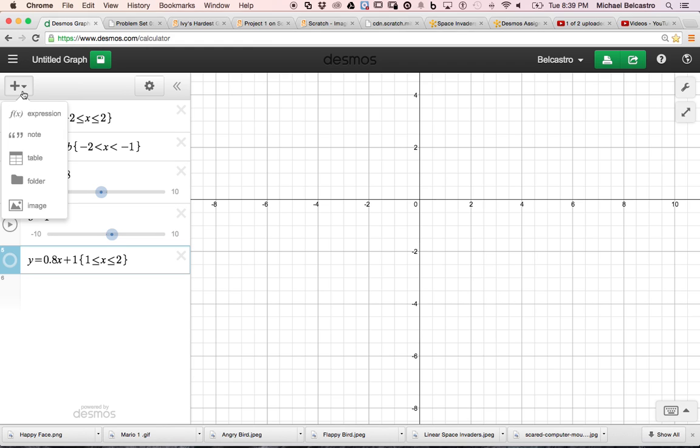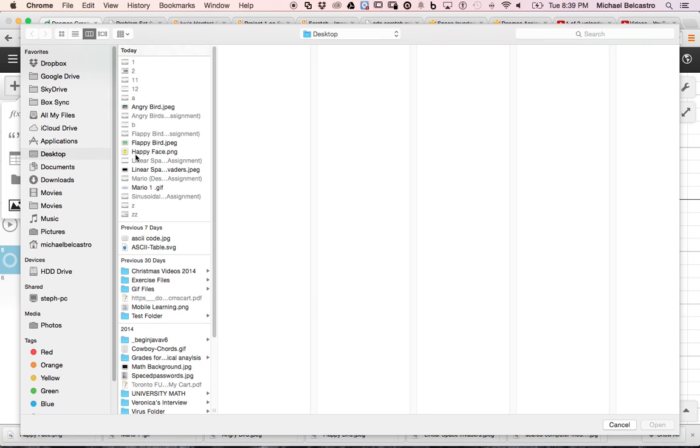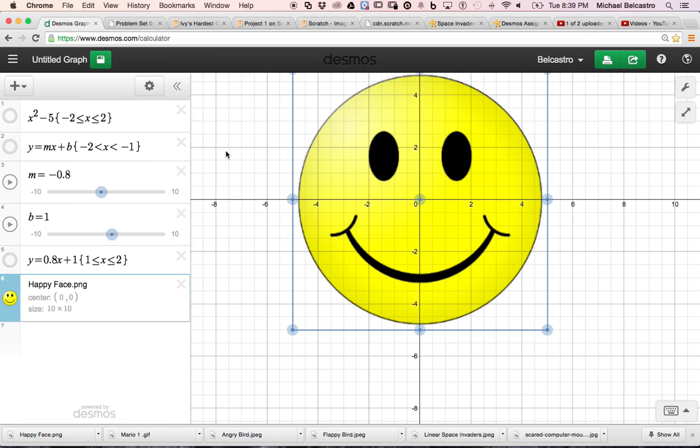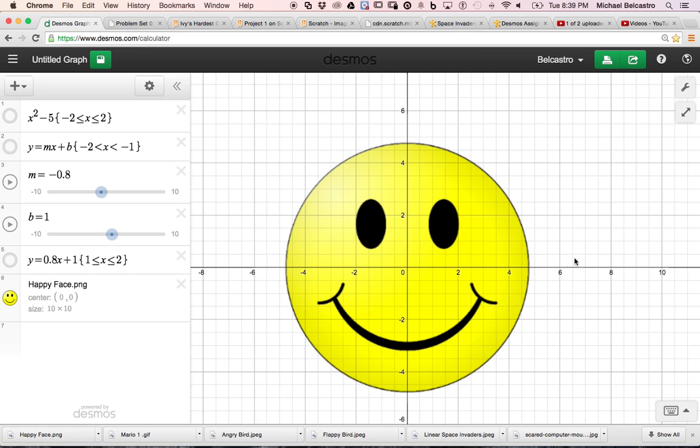I'm going to import an image. So I've already gone to Google. I went to the plus add item. Go to image here. And I'm going to put a happy face. So maybe I want to draw this happy face. If you notice, it actually keeps the grid in the background of the happy face, which is really good.